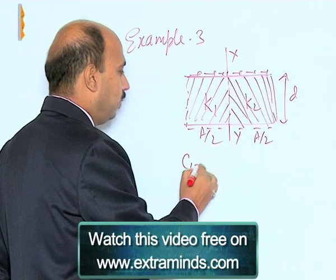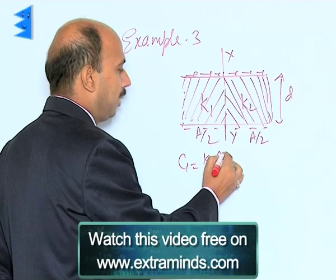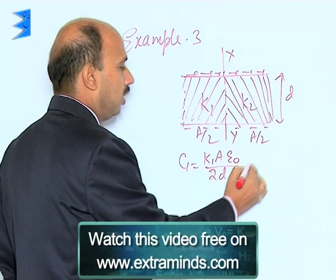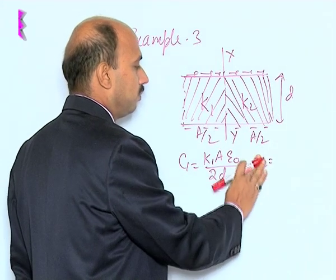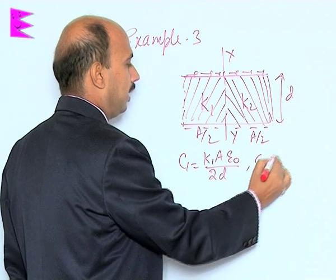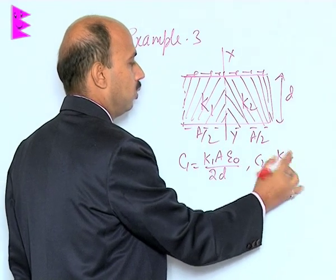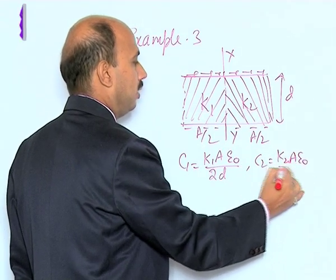We can write C1 is equal to K1 A by 2 epsilon naught by 2d, and C2 is equal to K2 A epsilon naught by twice of d.